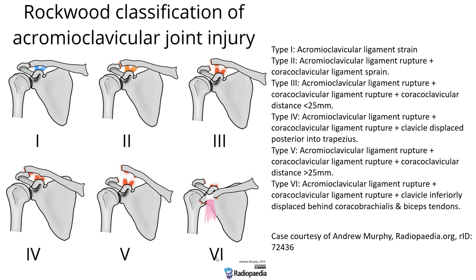Type 4 is an acromioclavicular ligament rupture with coracoclavicular ligament rupture and posterior clavicle displacement. Type 5 involves coracoclavicular ligament rupture and coracoclavicular distance more than 25mm. Type 6 is an acromioclavicular ligament rupture, coracoclavicular ligament rupture, plus the clavicle inferiorly displaced behind the coracobrachialis and biceps tendon.